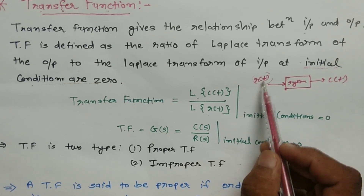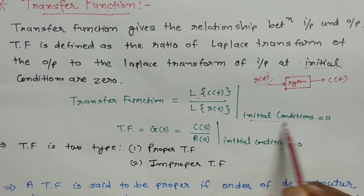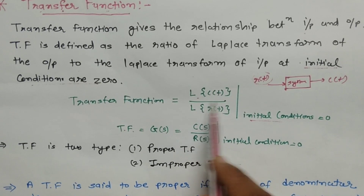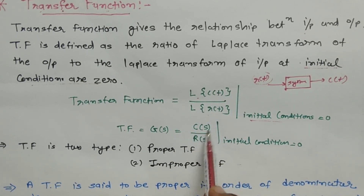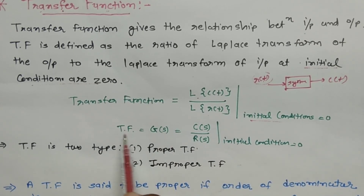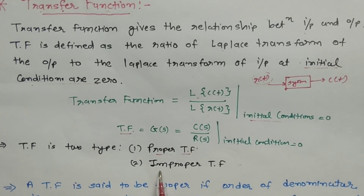The transfer function, denoted by G(s), equals the Laplace transform of c(t), which is C(s), divided by the Laplace transform of r(t), which is R(s), at initial conditions zero. That is the definition of the transfer function. It is classified into two types: proper transfer function and improper transfer function.